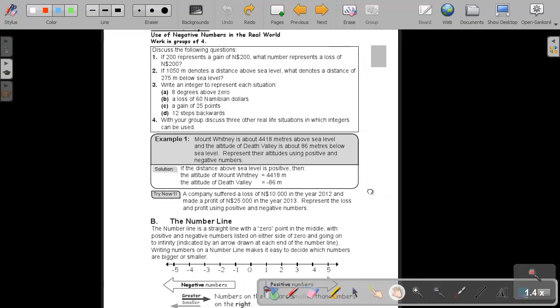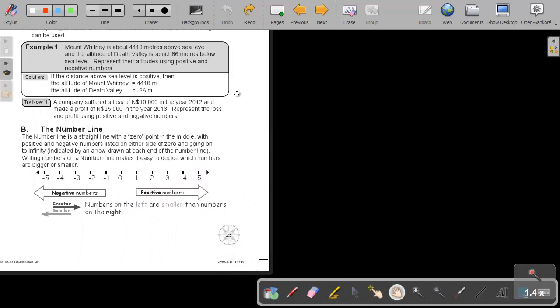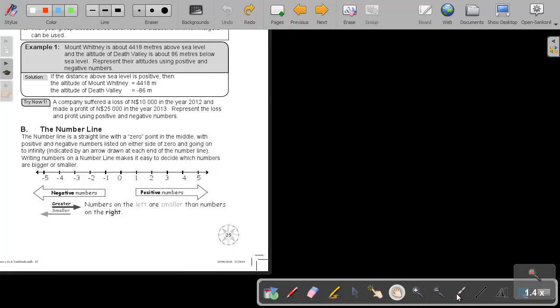We are going to look at an example. Let's look at example 1. Mount Whitney is about 4,418 meters above sea level, and the altitude of Death Valley is about 86 meters below sea level. Represent their altitudes using positive and negative numbers.